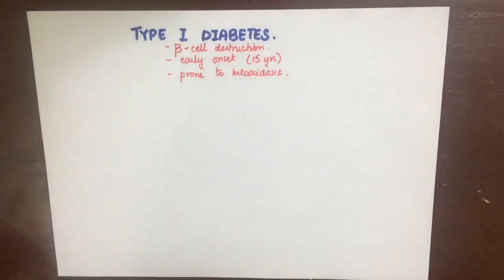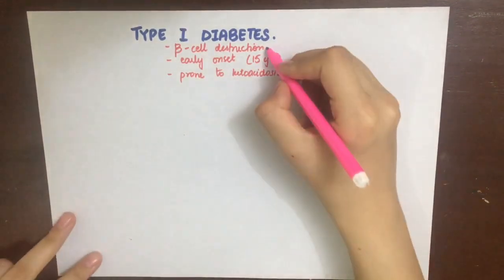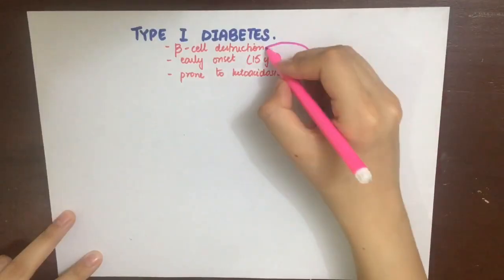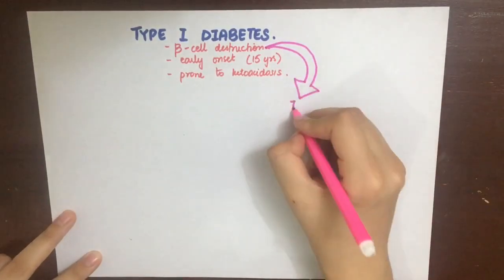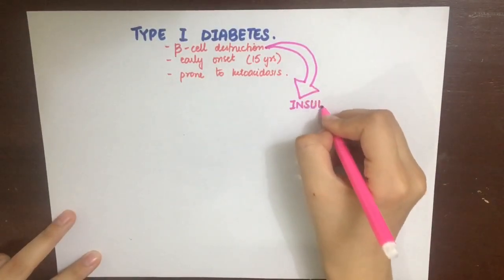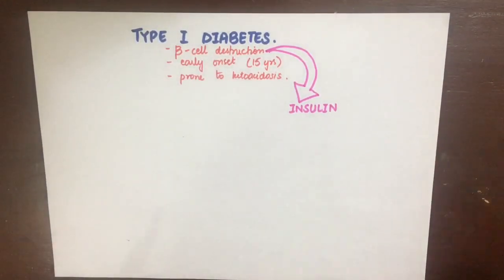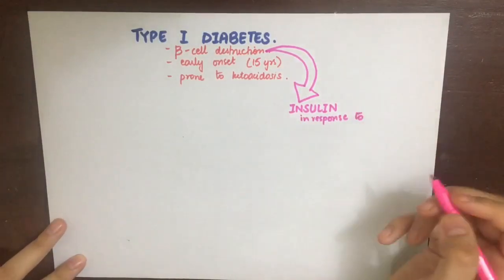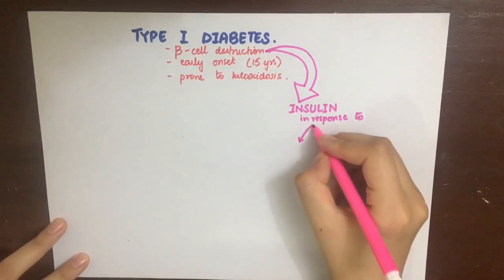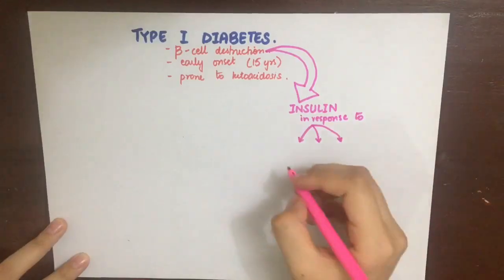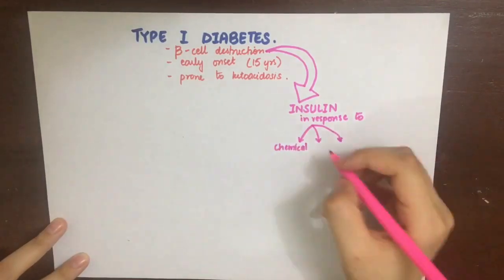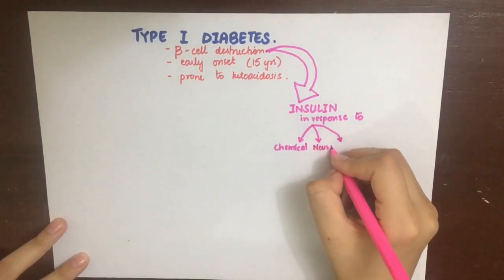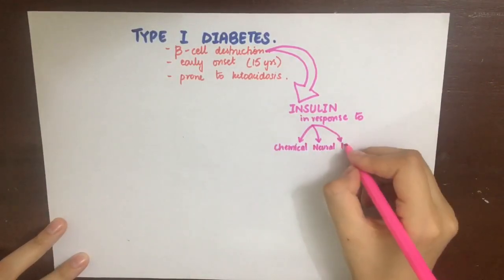Let's start focusing on normal insulin physiology to help us understand its function and use. The beta cells will secrete insulin in response to three main stimuli: first is the chemical stimulus, second is neural, and third is hormonal.